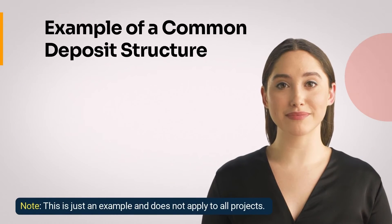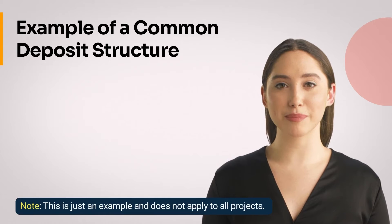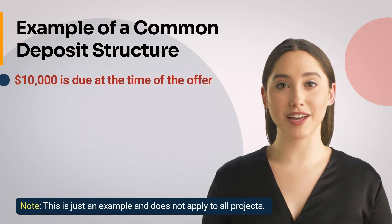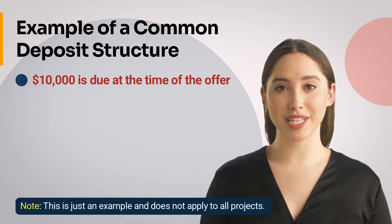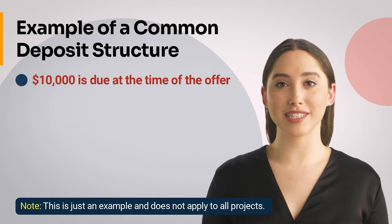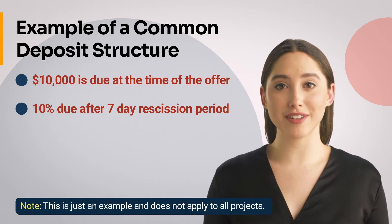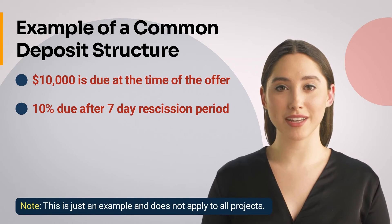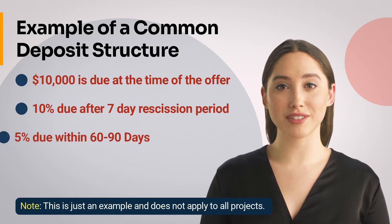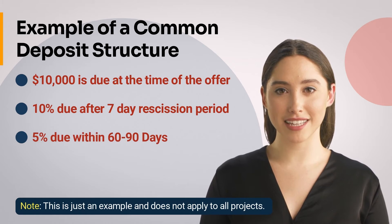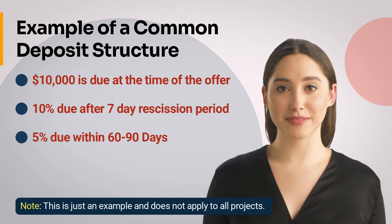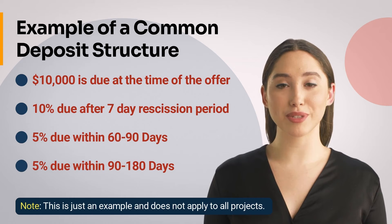Next, let us look at an example of what a common deposit structure for a presale condo might look like. First, $10,000 is due at the time of the offer. Then 10% of the purchase price is due after the 7-day rescission period. After that, 5% of the purchase price is due within 60 to 90 days, and finally 5% of the purchase price is due within 90 to 180 days.